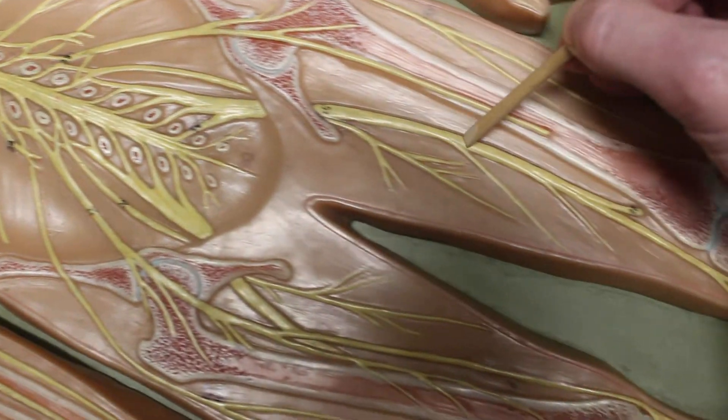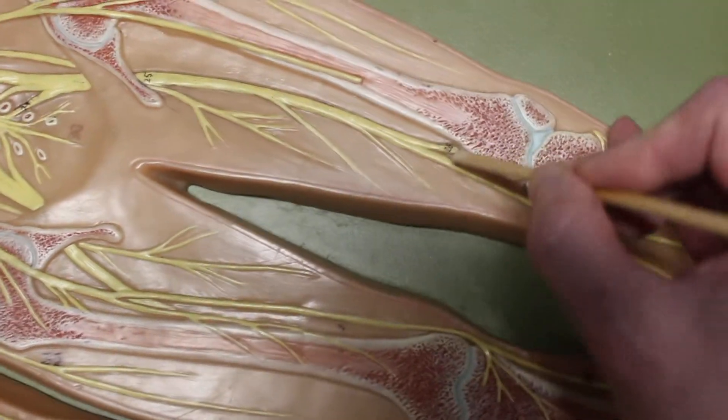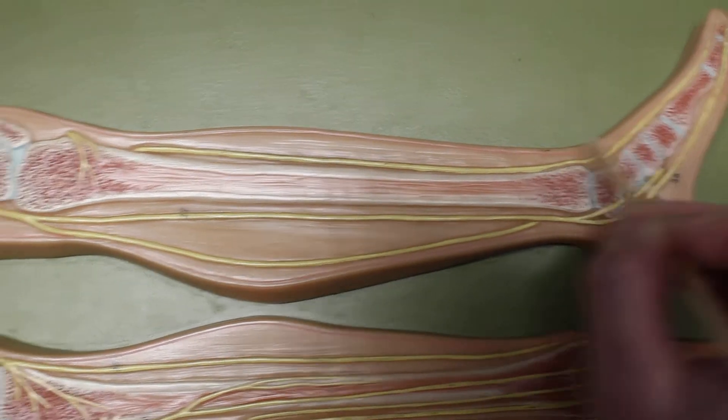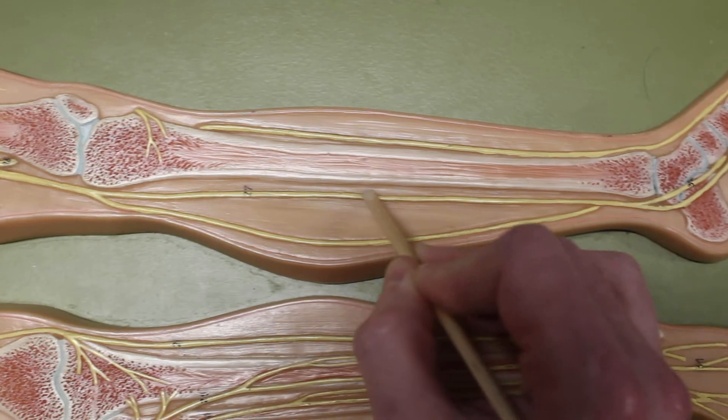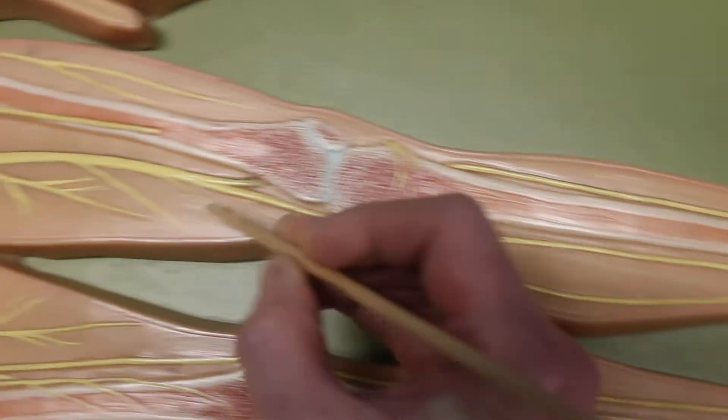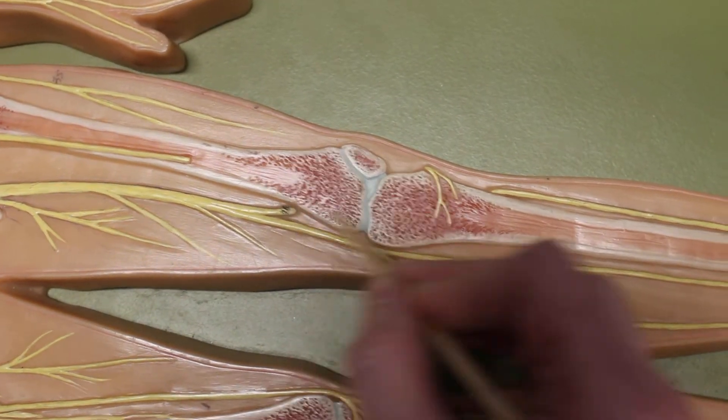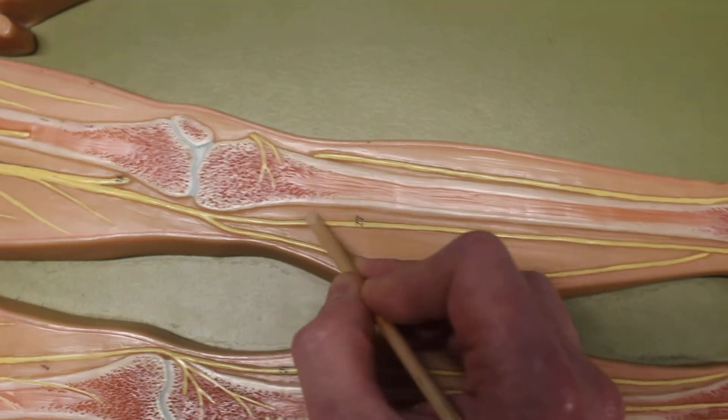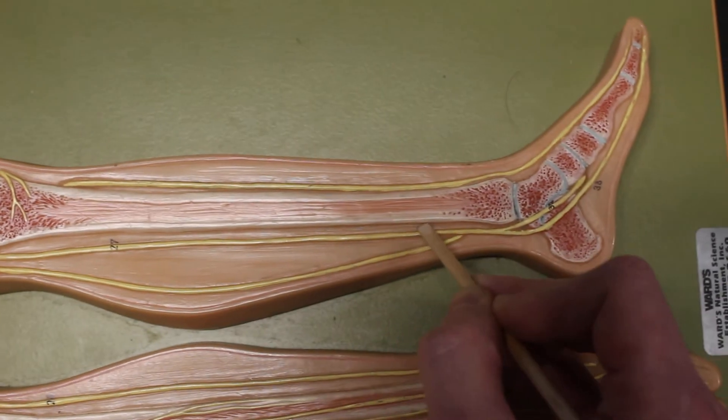For here, this is the sciatic nerve. It goes down and splits into the common tibial nerve and the common fibular nerve. So again, the sciatic nerve splits into the tibial nerve. It doesn't have the word common in it. And the common fibular nerve.